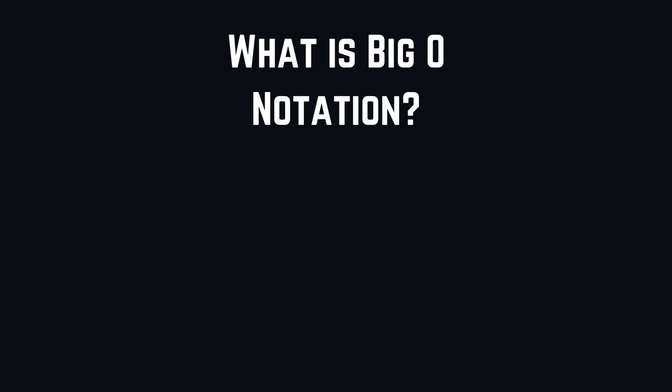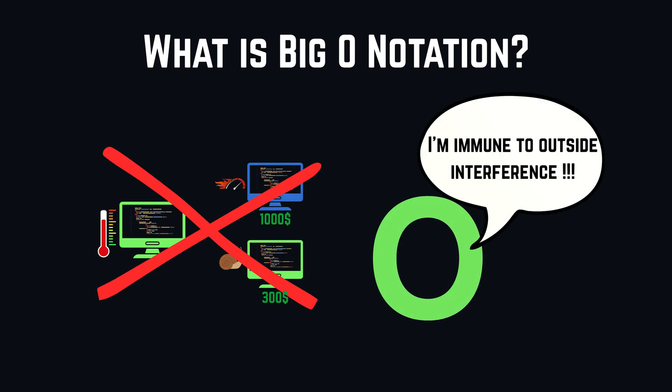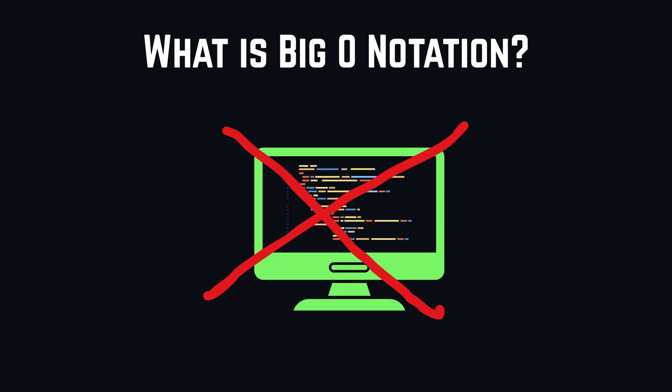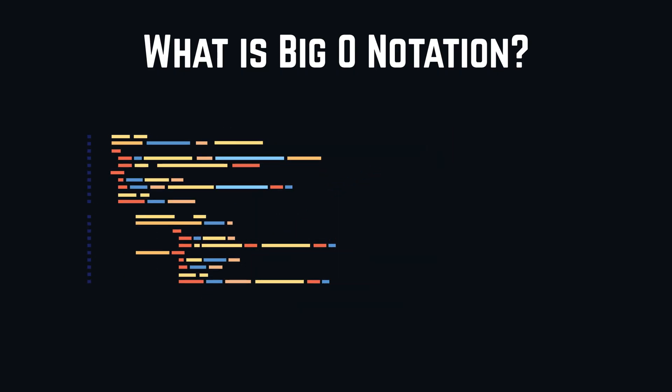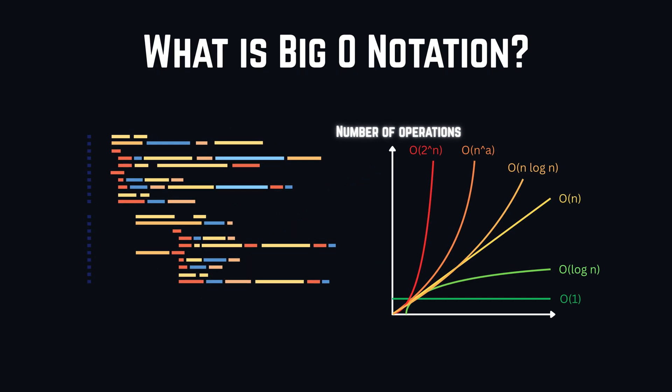Alright, what is big O notation? Big O notation is a way to measure our performance of a program independently. We are not simulating the code on any machine. Rather, we look at the structure of our code and analyze how many operations get executed in proportion to our data input.